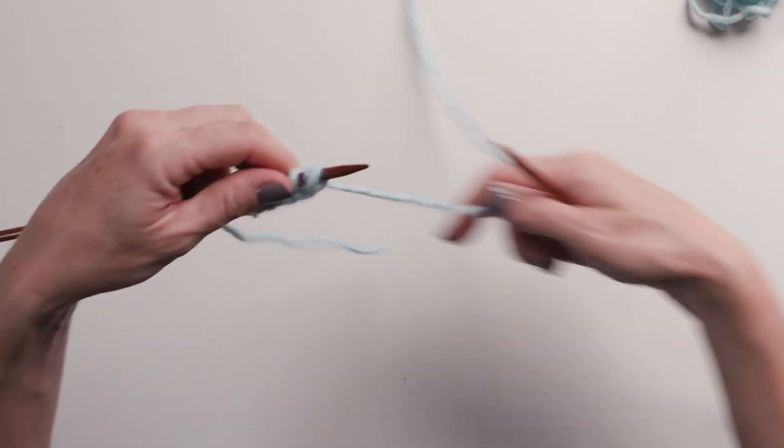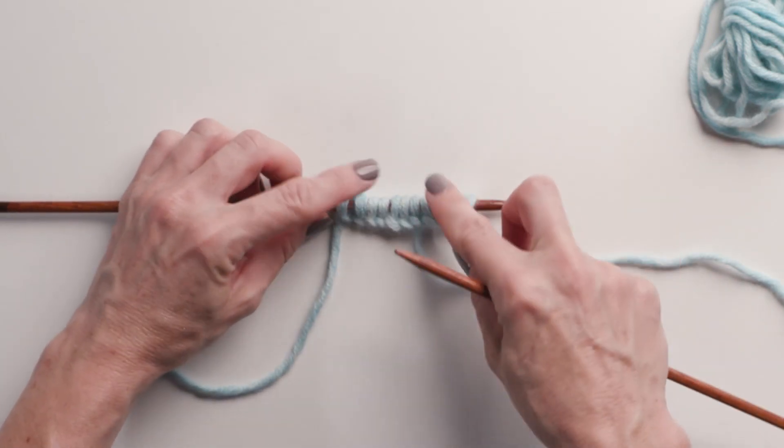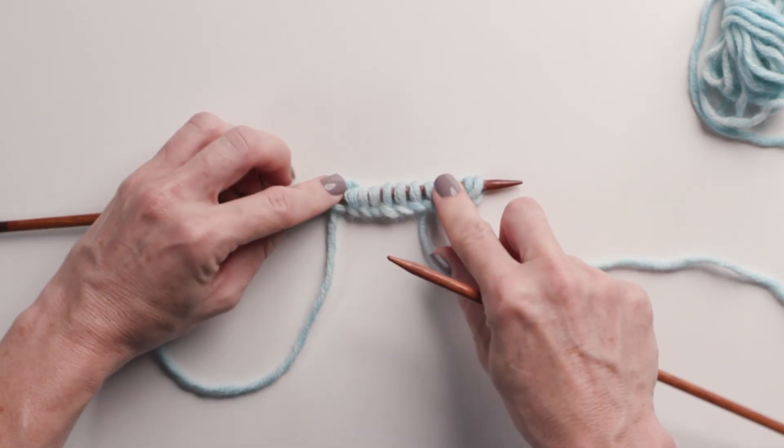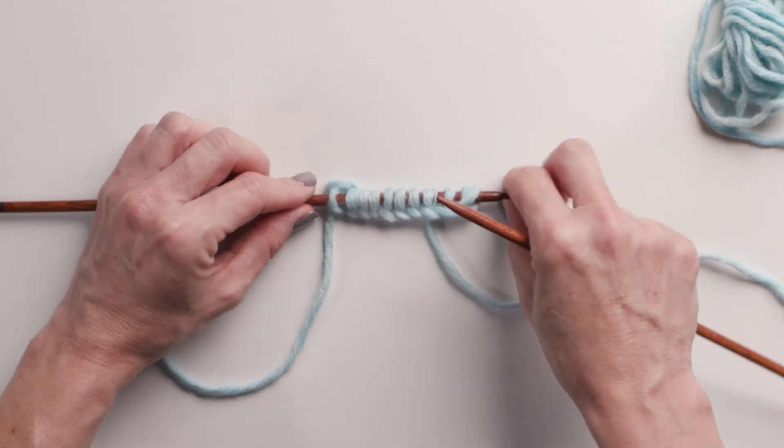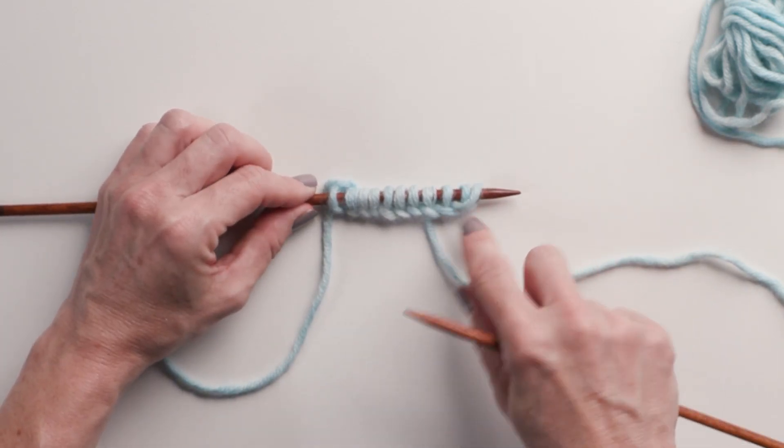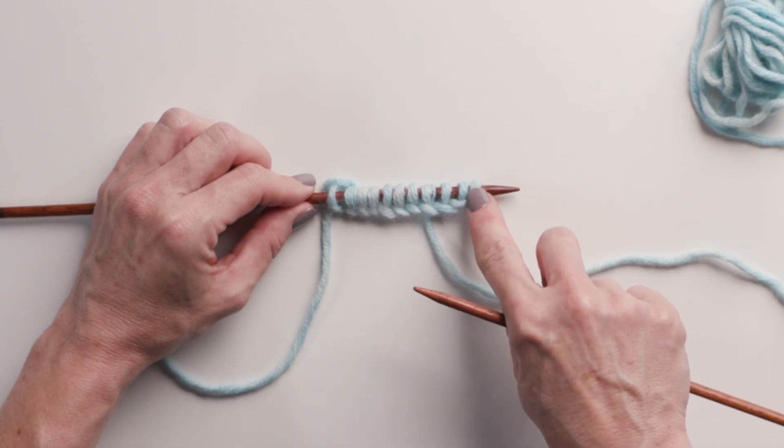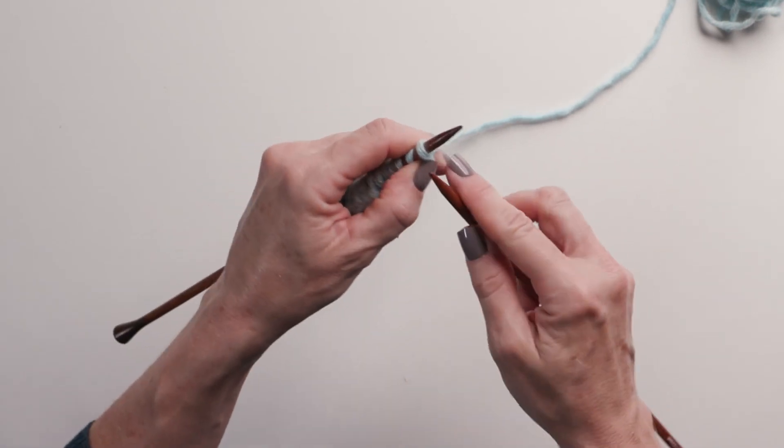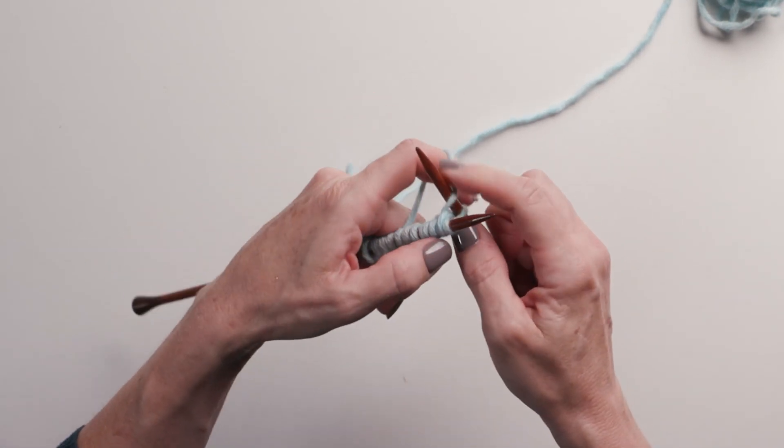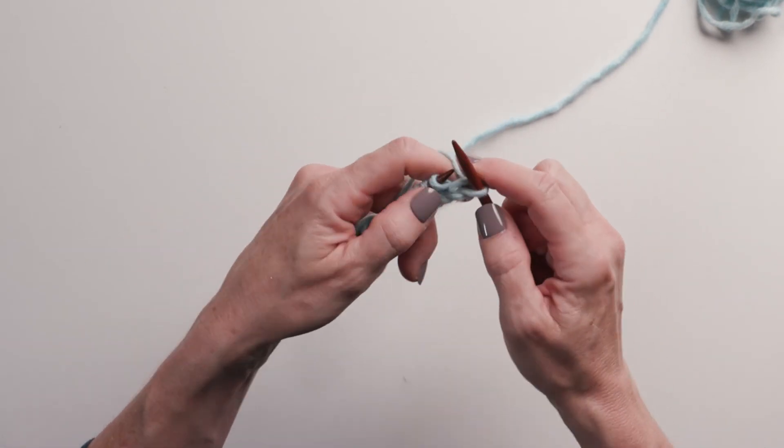And then when you're done casting on, this is what the cast-on looks like. And you can kind of see that's a pretty beefy edge there. You're going to have that final stitch that looks a little odd because it's crossing over your second stitch. You're going to tension your yarn. Do not turn this. And then just knit across the row that you just cast on.